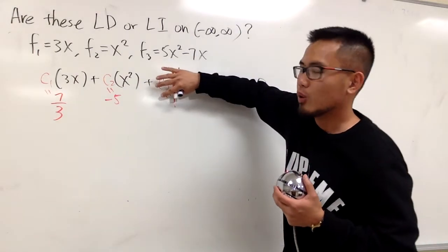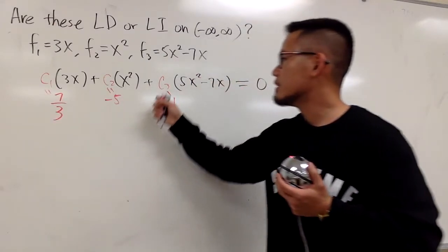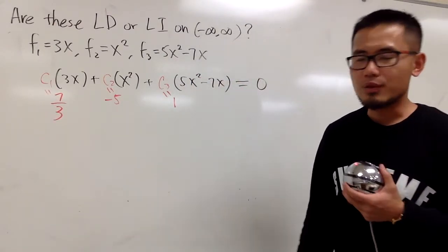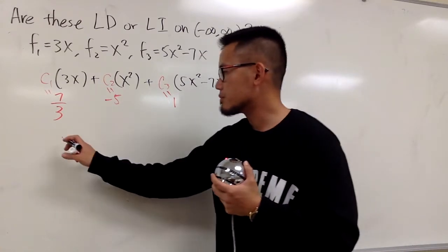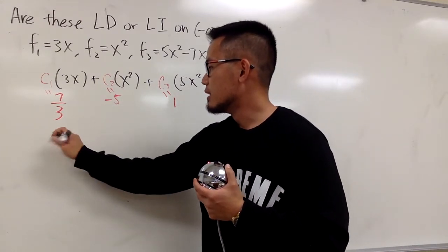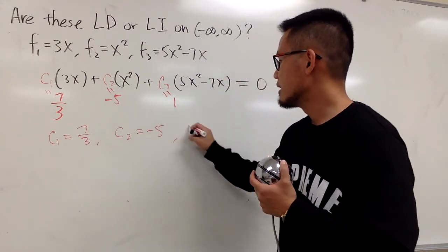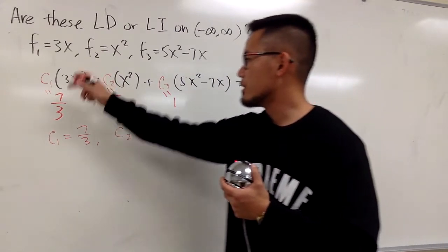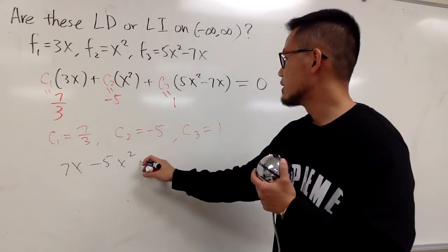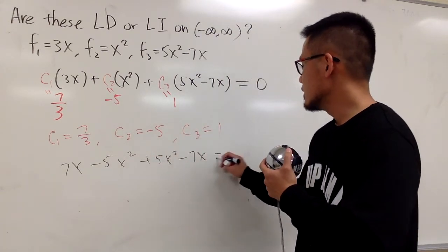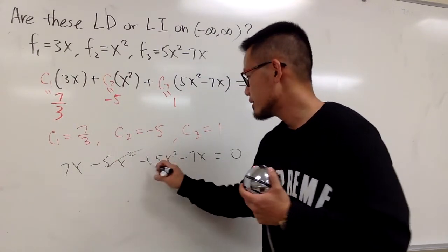So I found it. c1 is 7/3, c2 is negative 5, and c3 is 1. There are other valid choices too. But what you need to show is: let c1 = 7/3, c2 = −5, and c3 = 1. When you multiply out, you get 7x minus 5x squared plus 5x squared minus 7x, which equals 0. Everything cancels out nicely.